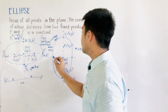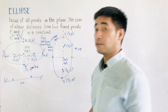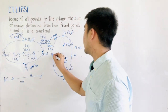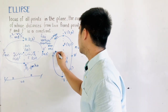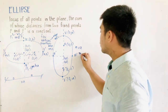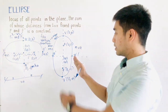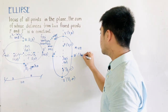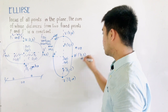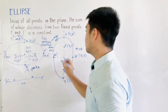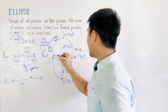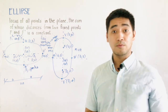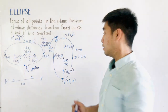For the vertical ellipse, we now have the minor axis with co-vertices W and W'. Since these fall on the X-axis, W is at B and 0, and W' is at negative B and 0.